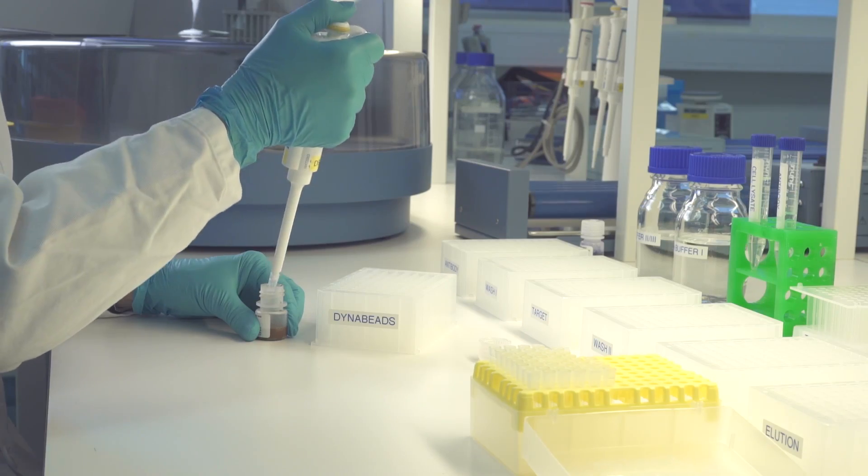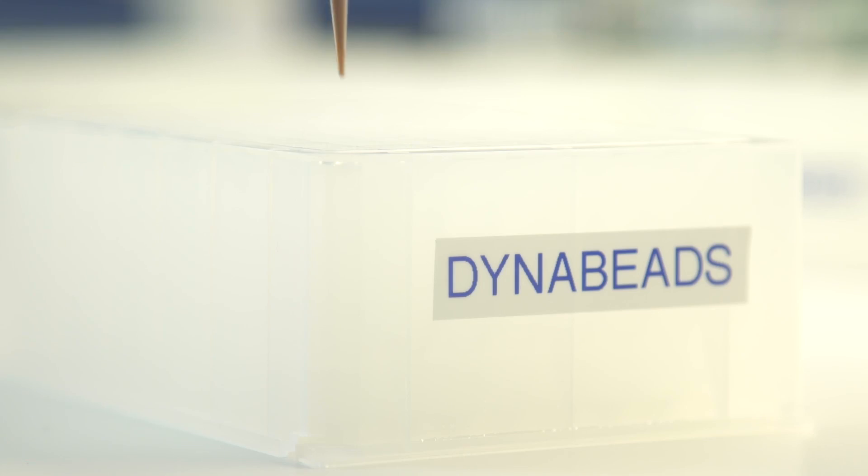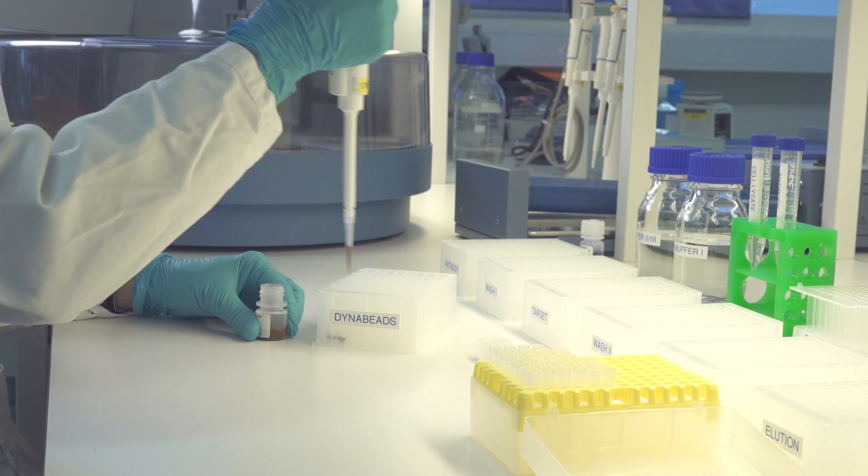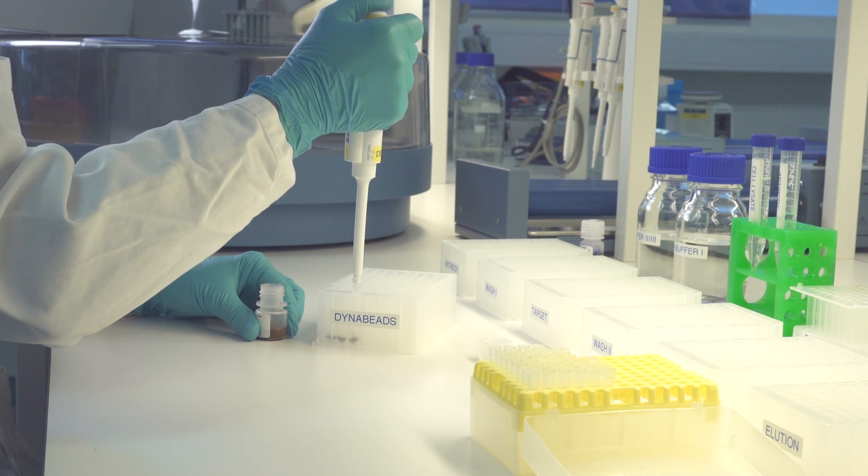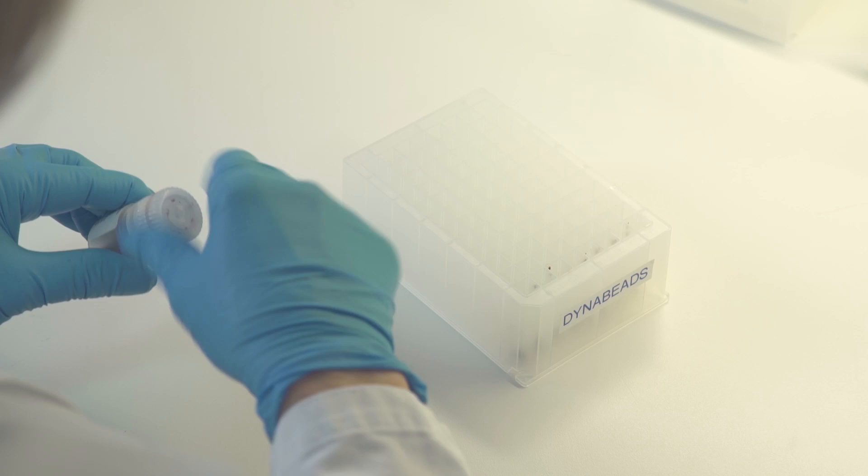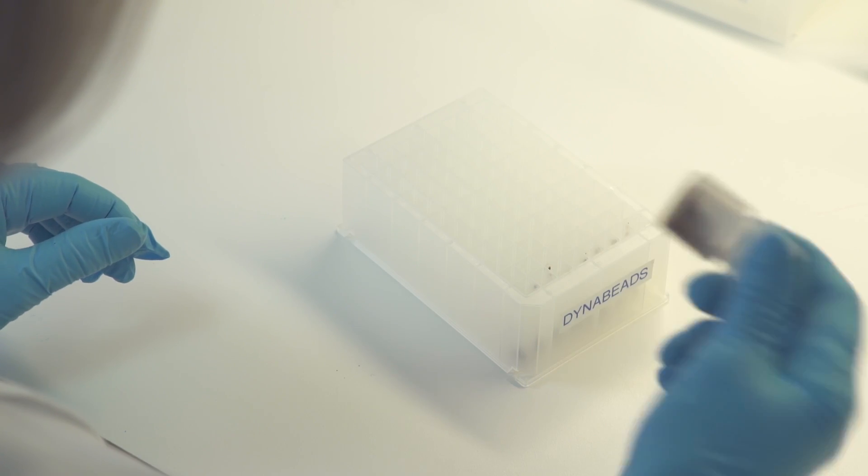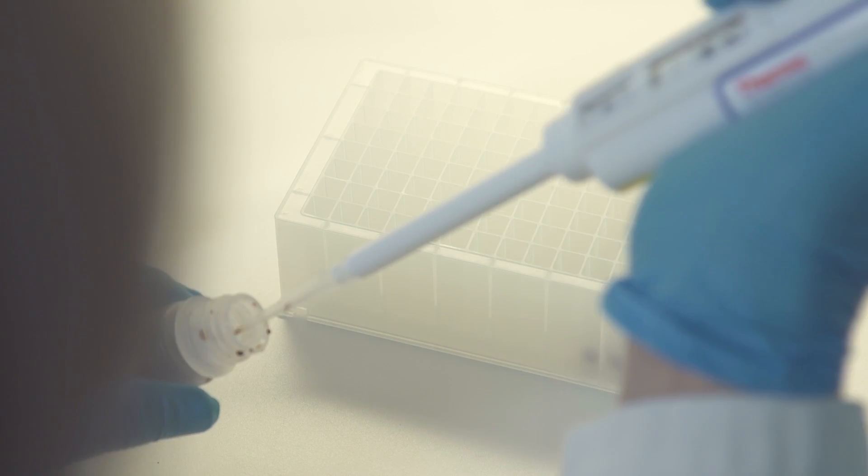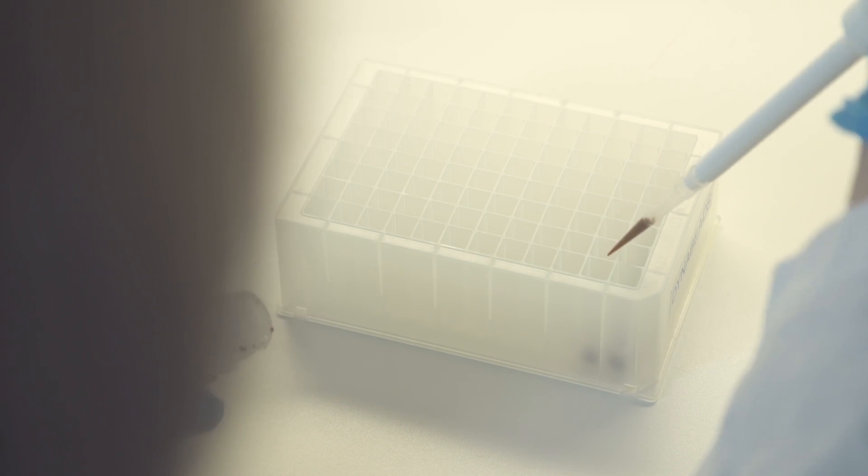The first plate is prepared by transferring 50 microliters of resuspended DynaBeads to each well. When performing many IPs simultaneously using several rows on the plate, make sure to mix the vial of DynaBeads between the transfers to each row. This ensures an even amount of beads are loaded to each well.